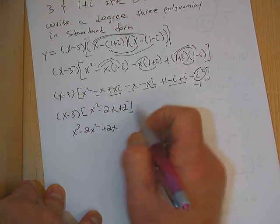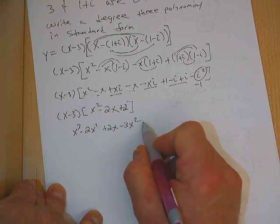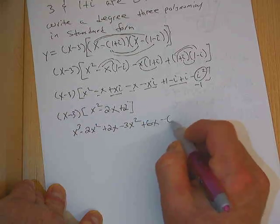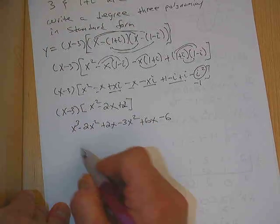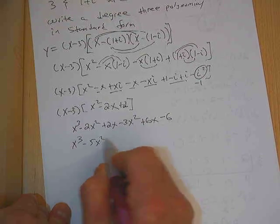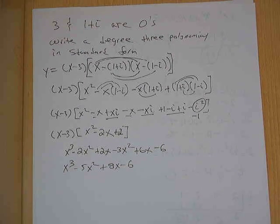x times x squared is x cubed. x times negative 2x is negative 2x squared. x times 2 is 2x. Negative 3 times x squared is negative 3x squared. Negative 3 times negative 2x is plus 6x. Negative 3 times 2 is minus 6. Combining like terms: x cubed minus 5x squared plus 8x minus 6. How about that?